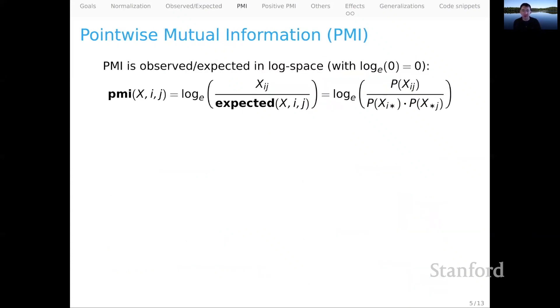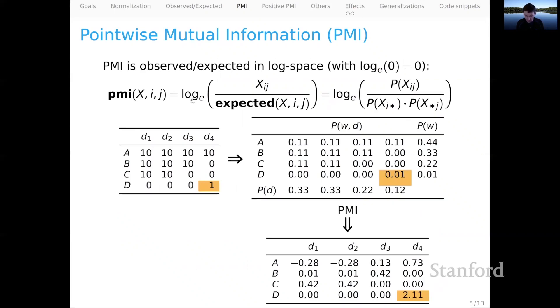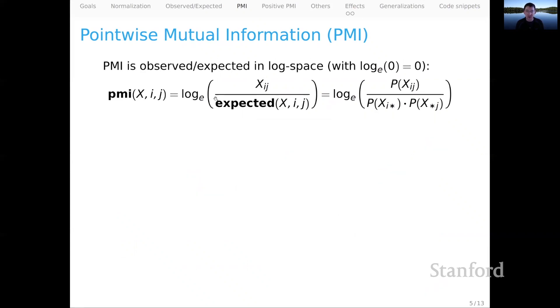And that brings us to really the star of our show. And in fact, the star of a lot of the remainder of this unit. This is pointwise mutual information or PMI. PMI is simply observed over expected in log space where we stipulate that the log of 0 is 0. In a bit more detail for a matrix X given cell IJ, the PMI value is the log of the observed count over the expected count. And that's it.